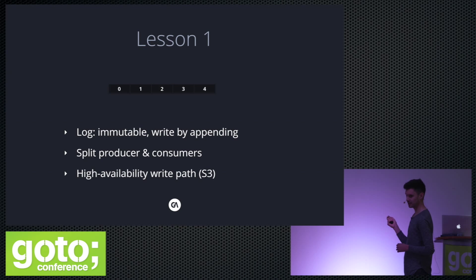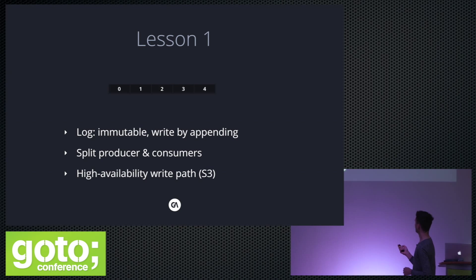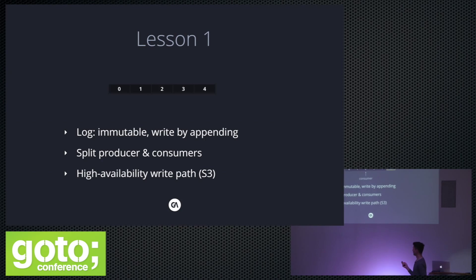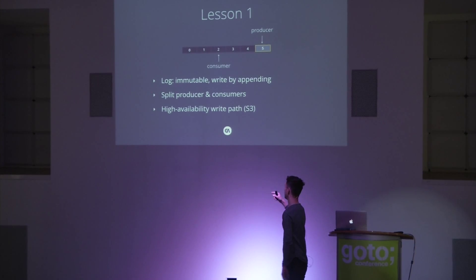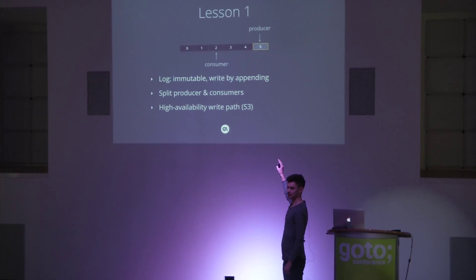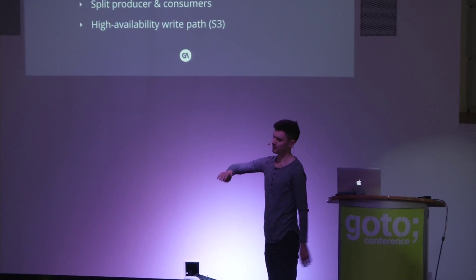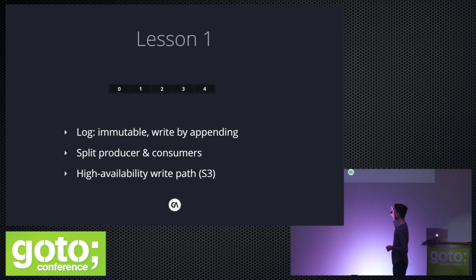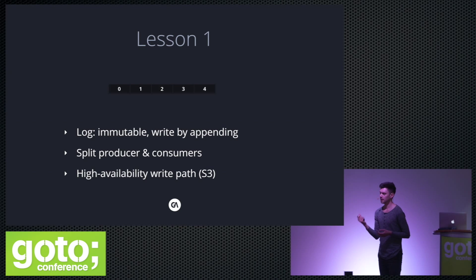A log is like messages, lines, or chunks — whatever you want to call them. You always write by appending to the end, and you read somewhere in the middle of the log. If you have a real-time system, you want to read at the tail of the log. If you want to go back in time and recreate some state, you tell your consumer to use an earlier offset rather than the latest. If you've ever used Kafka, Kafka is exactly this thing.